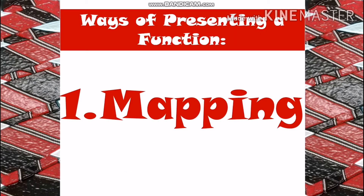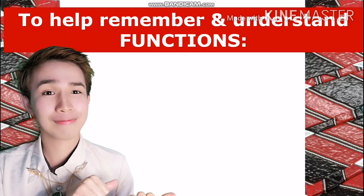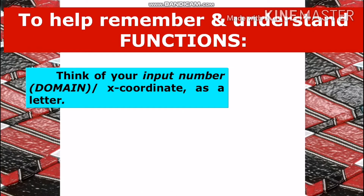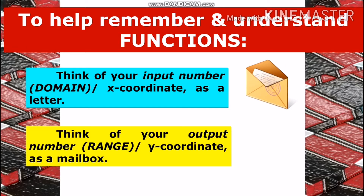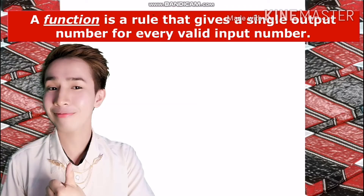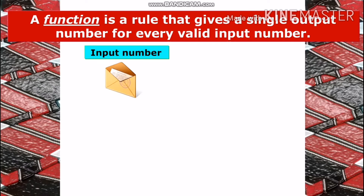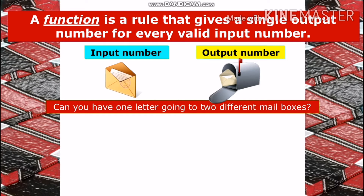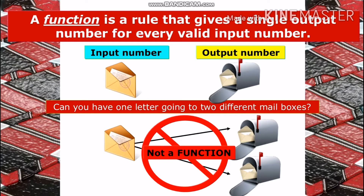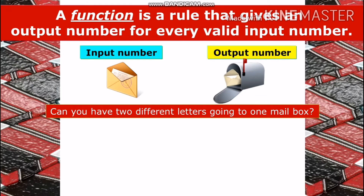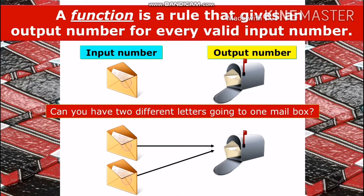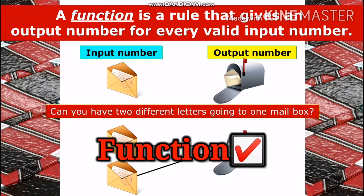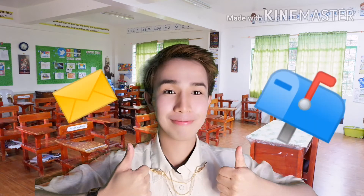Let me check if you can still differentiate functions from mere relations. To help remember and understand functions, let's think of our input number or x value as a letter, and our output number or y value as a mailbox. A function is a rule that gives a single output number for every valid input number. Can you have one letter going to two different mailboxes? Of course not — the message will not be delivered well because it will be torn. Can you have two different letters going to a single mailbox? Why not — the person might happen to receive two or even more letters.